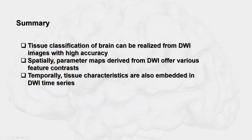In summary, tissue classification of the brain can be realized from DWI images with high accuracy. Spatially, parameter maps derived from DWI offer various feature contrasts. Temporally, tissue characteristics are also embedded in the DWI time series. These features are good for segmentation using DWI images. Thank you for your attention.